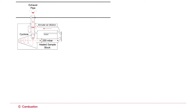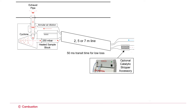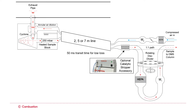An annular air diluter is positioned at the point of sampling. A low-pressure heated sample line with a rapid transit time ensures low solid particle loss. The CSA inserts at the end of the line, and the existing second diluter sets the overall concentration.